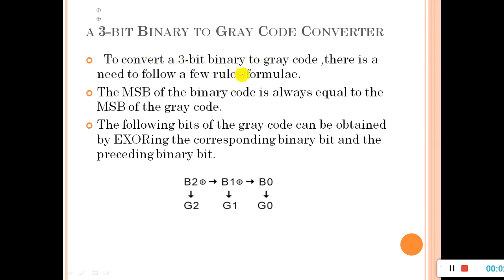To convert a three-bit binary to gray code, there is a need to follow a few rules or formulas. We have discussed this in detail before, but let me recall it. The MSB of the binary code is always equal to the MSB of the gray code — so we keep the binary MSB as it is; whatever the MSB of binary is, it is kept the same in gray code.